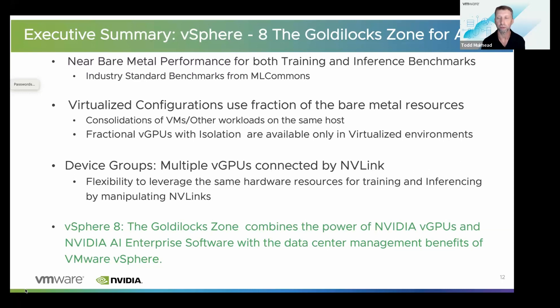I really like the term 'Goldilocks zone' — you keep all the performance you would get with bare metal, but you also gain the other advantages of virtualization, including using only a fraction of the resources and freeing those resources for other things. This is an exciting paper that brings the key advantages of virtualization with vGPUs and AI/ML all together in one place. Thank you, and thanks to everybody for joining. I will see you again on another episode of the Extreme Performance Series.